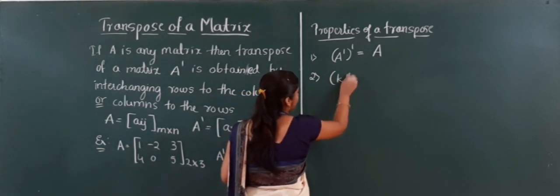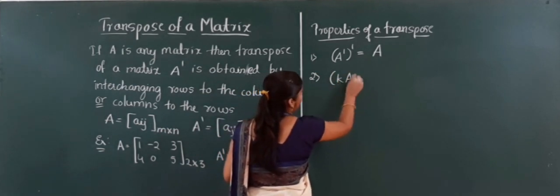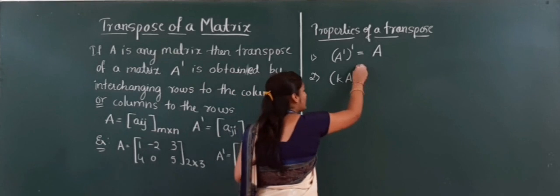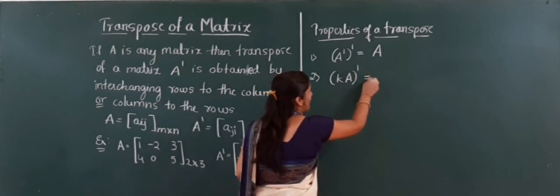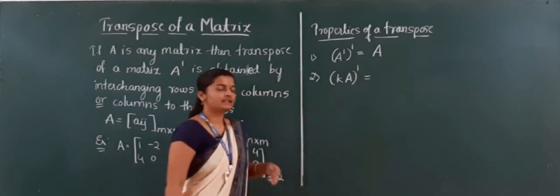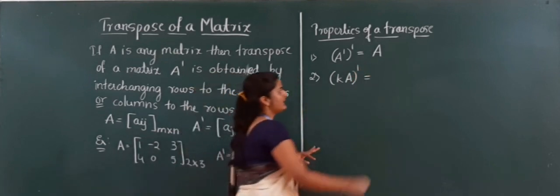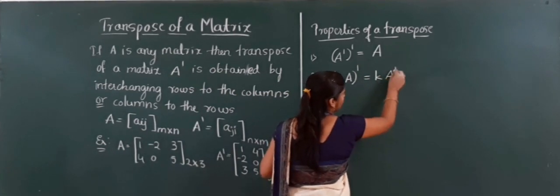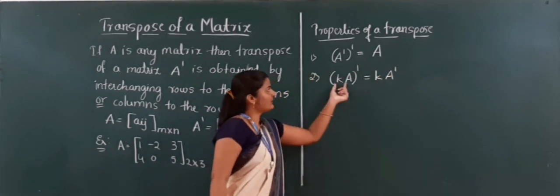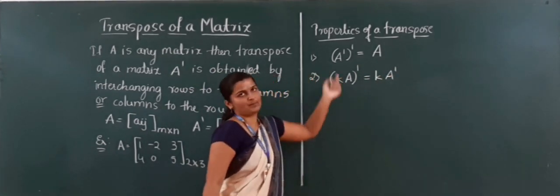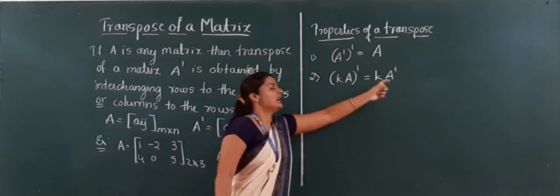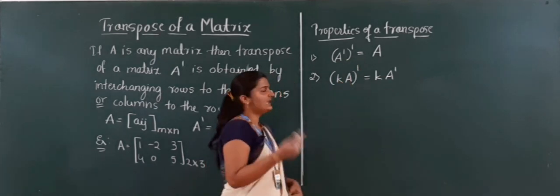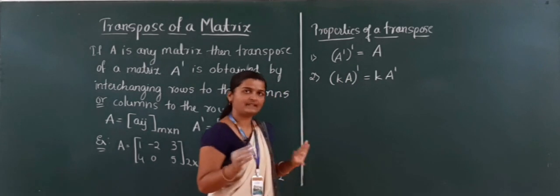The second property: if you have a matrix A multiplied by scalar k, and then apply the transpose, this is always equal to k into A dash. That means whether you multiply first then apply transpose, or apply transpose then multiply, the answer will be the same.